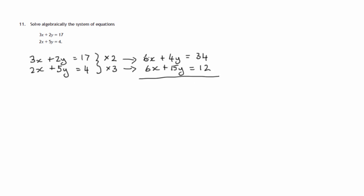So we've now got 6x, 6x, in both equations. Since they're both the same, we subtract. 6x taken away from 6x, no x's. 15y taken away from 4y, that'd be minus 11y. And 12 taken away from 34, that'd be 22. We now divide both sides by negative 11. And we get negative 2. So we've found that y is negative 2.